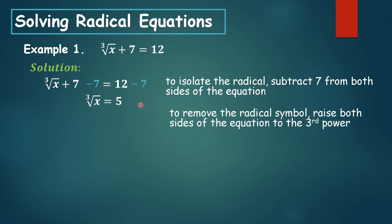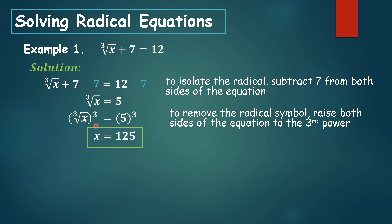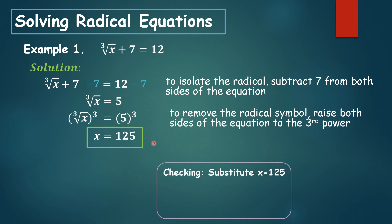To remove the radical symbol, raise both sides of the equation to the third power. This cancels the radical, giving x equals 125. Substituting back: the cube root of 125 plus 7 equals 5 plus 7, which is 12. So it's correct.